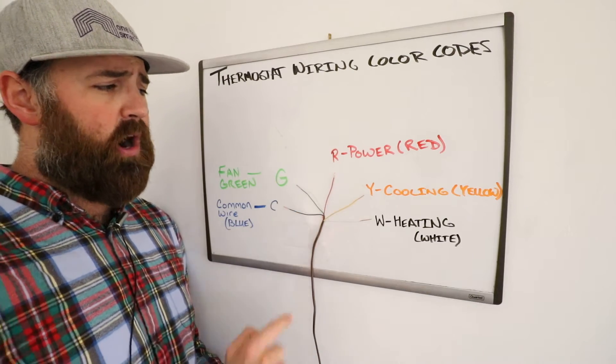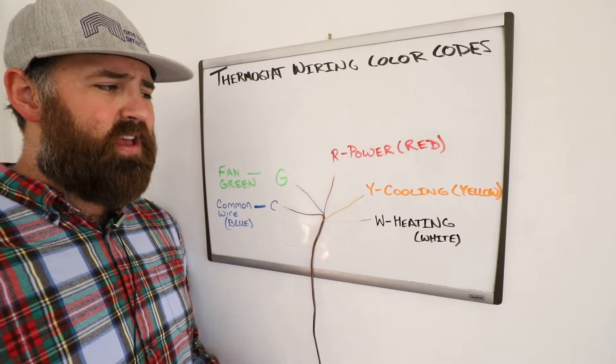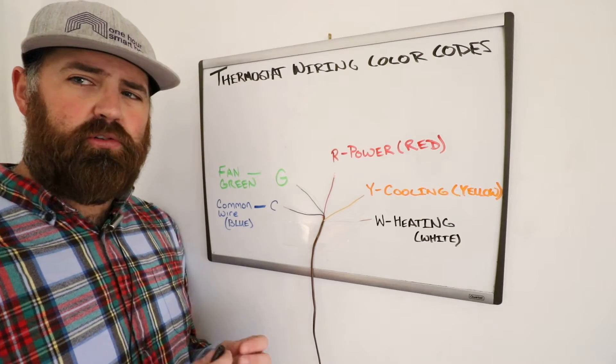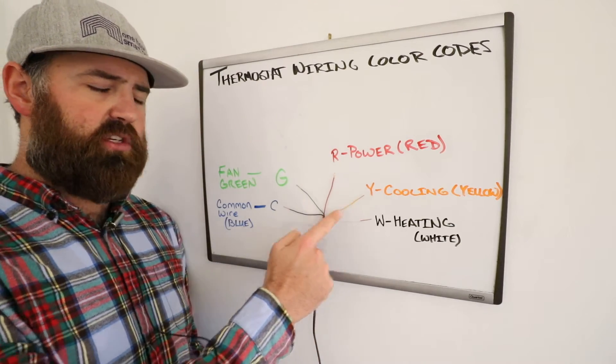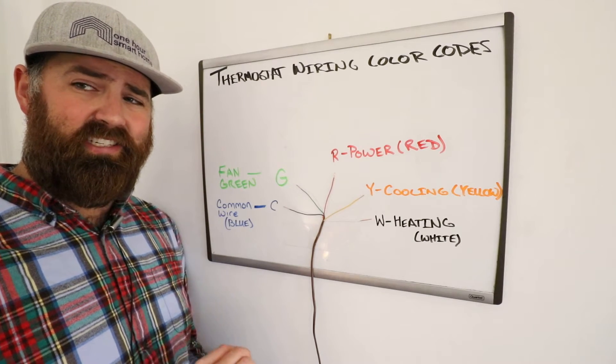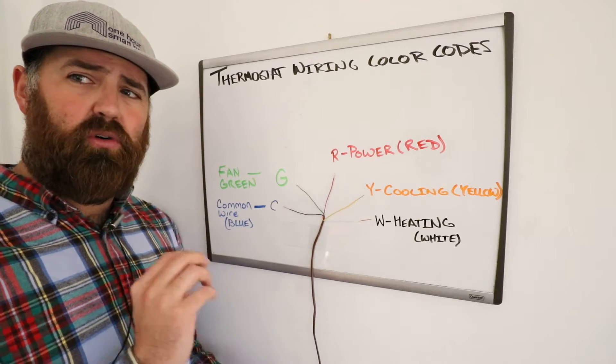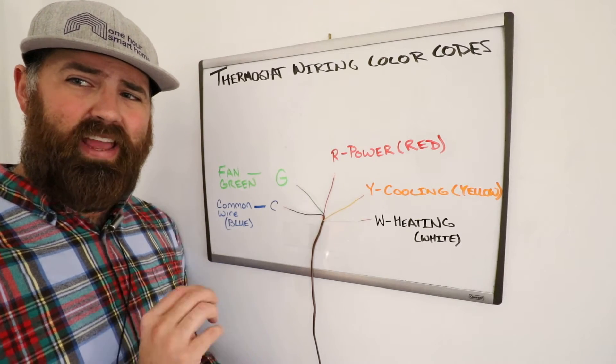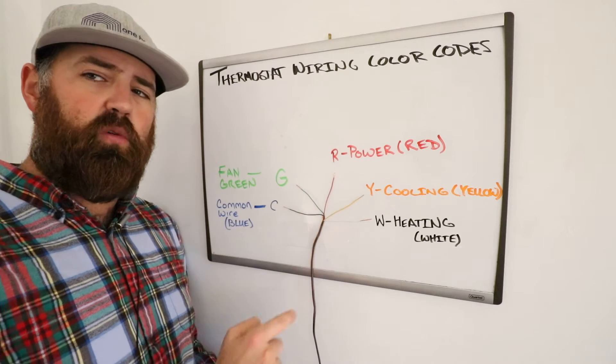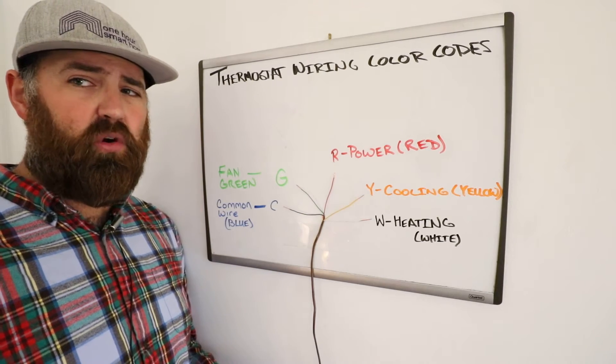So the next wire that we have here is the Y-wire, the yellow wire. That is used for cooling. It controls your air conditioner, and this wire goes all the way back to your HVAC system, connects to a terminal on your HVAC system board, and controls your air conditioner, compressor, and condenser, and when power from the R-wire goes to the Y-wire, it will activate your cooling system.